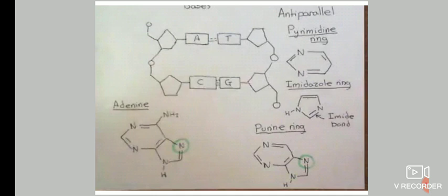Among the bases, A and G are the purines, and C and T are the pyrimidines. A pyrimidine ring is like a benzene ring with two nitrogen atoms, and an imidazole ring is a five-atom ring with two nitrogens and two double bonds. A purine is made with the combination of a pyrimidine ring with an imidazole ring.